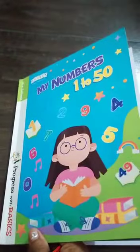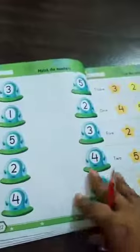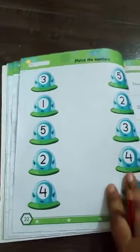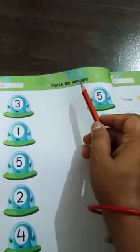So, open your maths book, My Numbers 1 to 50. Move to page number 22. On this page we have an activity: match the numbers.